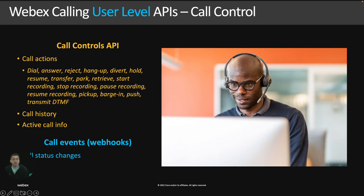On the end-user side, the user-level calling APIs are separate from administration. Starting with the call control APIs — they provide information about active and past calls and can be used to perform call actions. Call status change events are also available through webhooks as part of these controls, as I'll show on the next slide. Together, these APIs and events can be used to optimize active call workflows and custom calling clients.